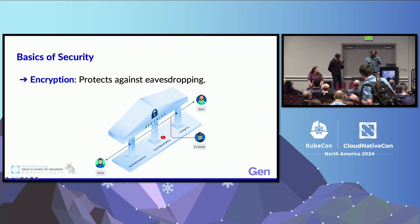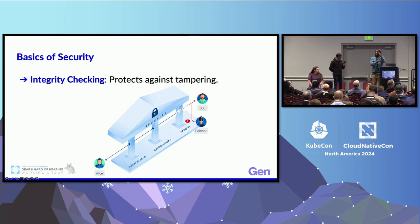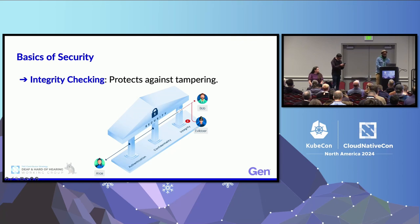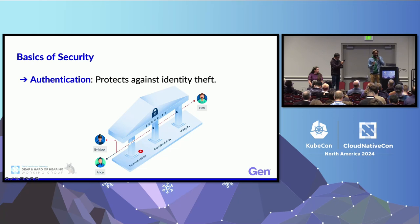Achieving secure communication involves three fundamental building blocks: encryption, integrity, and authentication. Encryption is about privacy — by scrambling data, encryption ensures that only the intended recipient can read it, so even if someone intercepts the data, they can't understand it without the right decryption key. Integrity is about making sure that the data remains unchanged from sender to receiver. We use methods like hashing to compare the data at both ends — if there's a difference, we know something is wrong. And finally, authentication answers the question: are you who you say you are?